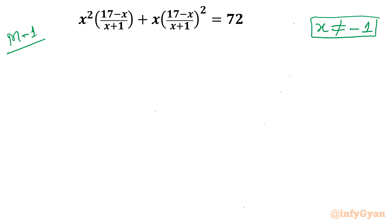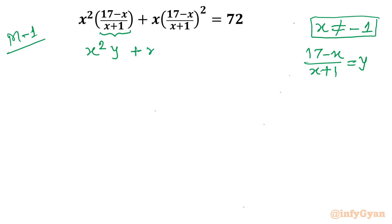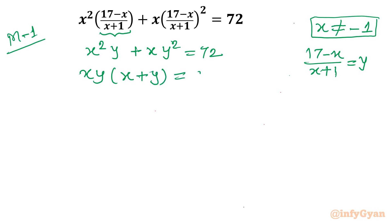For method number one, I will apply a substitution straight away: let y equal (17 minus x) over (x plus 1). With this substitution, the equation becomes x² y plus x y² equals 72. You can see easily that xy is common, giving xy times (x plus y) equals 72.